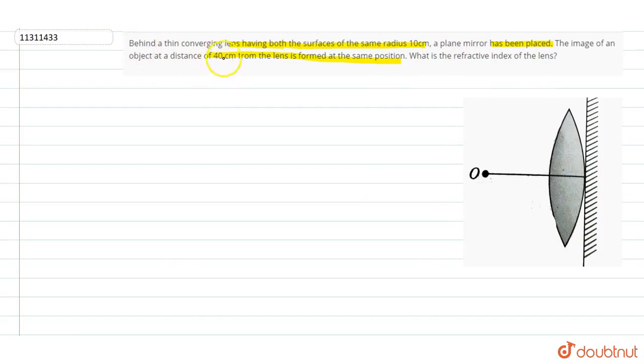When the object is at 40 cm, the image is formed at the same position. This means the focal length is 40 cm.